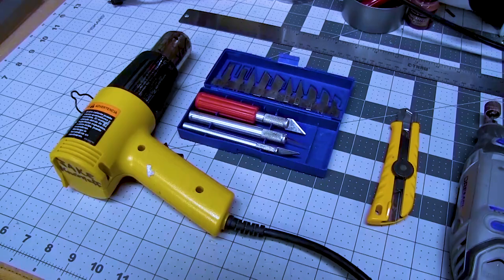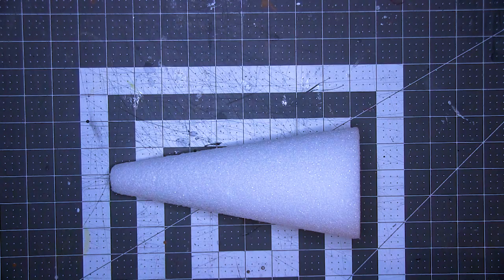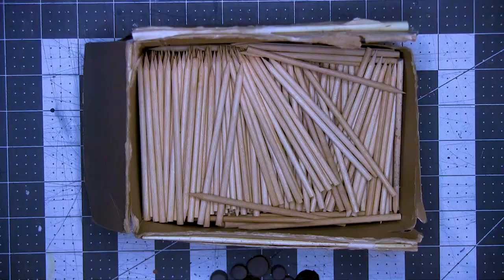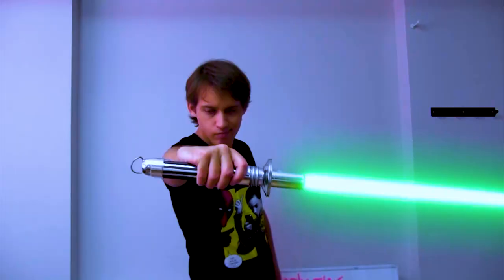Here we go. For this build I use EVA foam, a styrofoam cone, toothpicks, wood, hot glue, foil, paint, cutting tools, sanding tools, safety gear, scissors, razor, pens, and a box cutter.